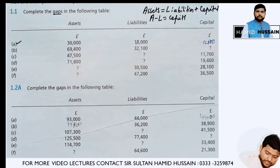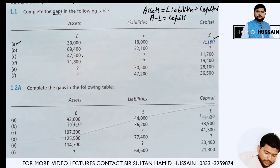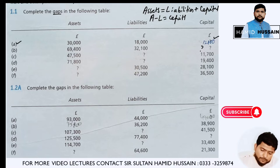In the next question, the assets given are 69,400 and the liabilities are 32,100. We need to subtract liabilities from assets: 69,400 minus 32,100, and we get 37,300.